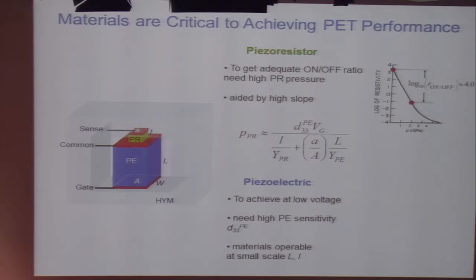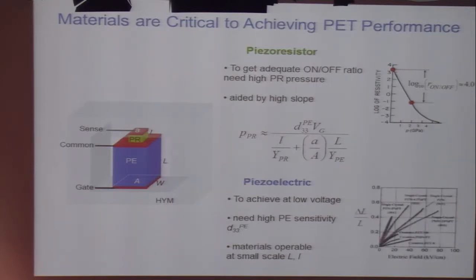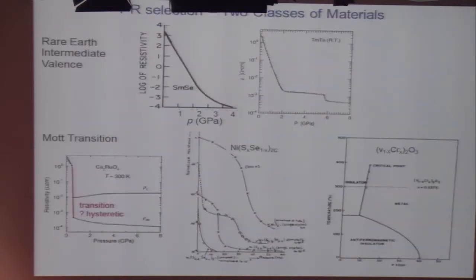To achieve low voltage, we need the high PE sensitivity, D33, and we need the materials to be operable at small scale. That last one is kind of the key challenge which this technology poses. Here is an example of the piezoelectric invented in Penn State about 23 years ago. This is the extension, piezoelectric extension versus electric field. And these are the older materials down here.